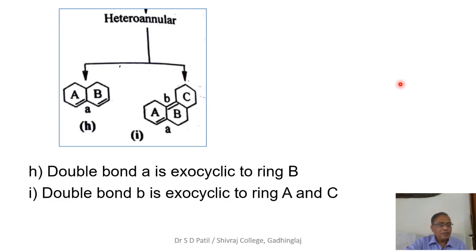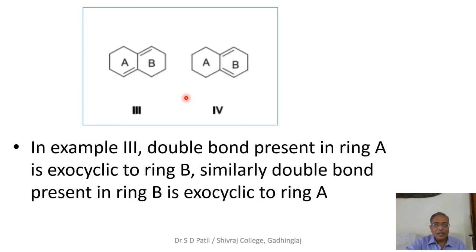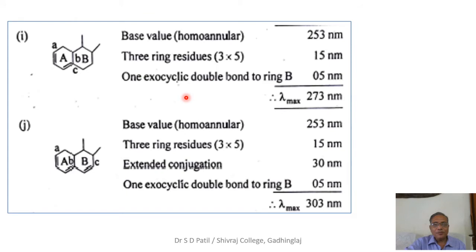In the last structure, both double bonds are endocyclic like structure D, present in the same ring with no exocyclic double bond — this is an example of a heteroannular diene because the double bonds are in two different rings. In structure H, double bond A is exocyclic to ring B. In the tricyclic structure with rings A, B, and C, double bond B is exocyclic to ring A and simultaneously exocyclic to ring B — these values must be considered when calculating lambda max.